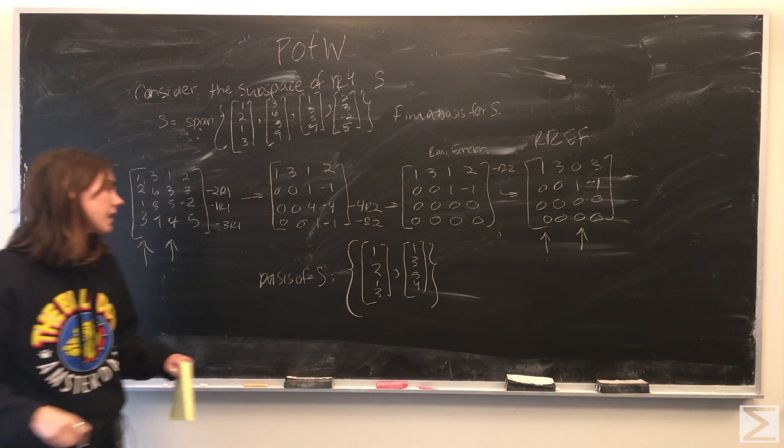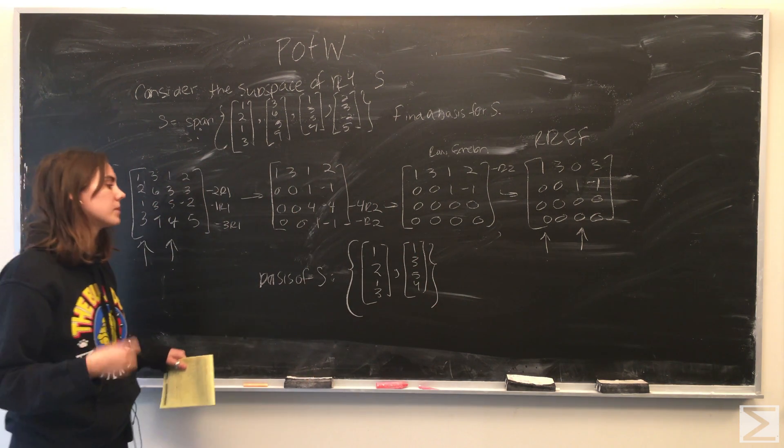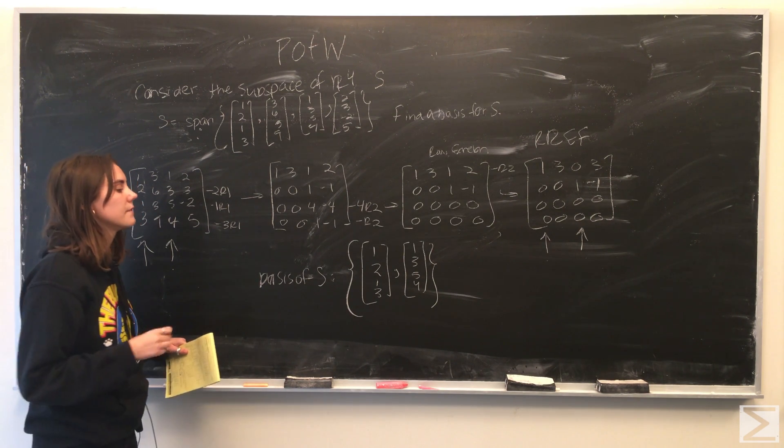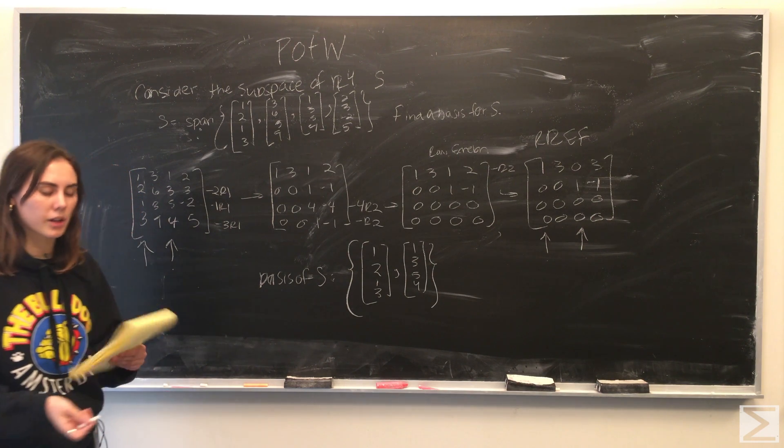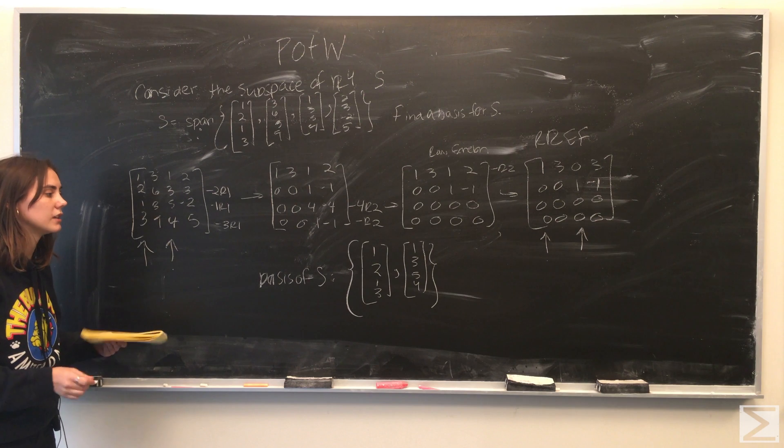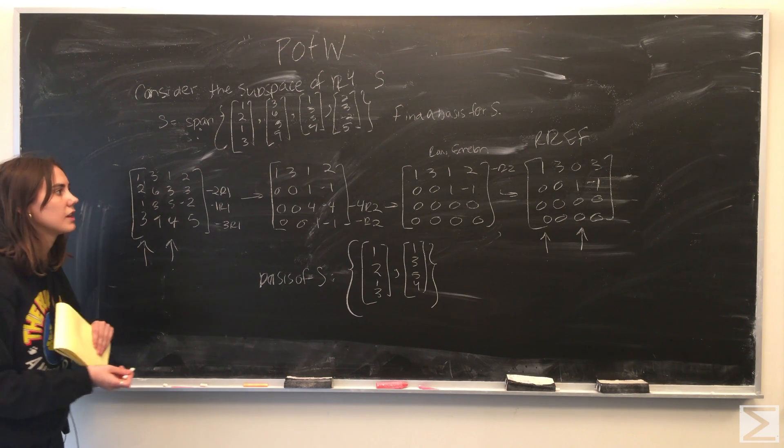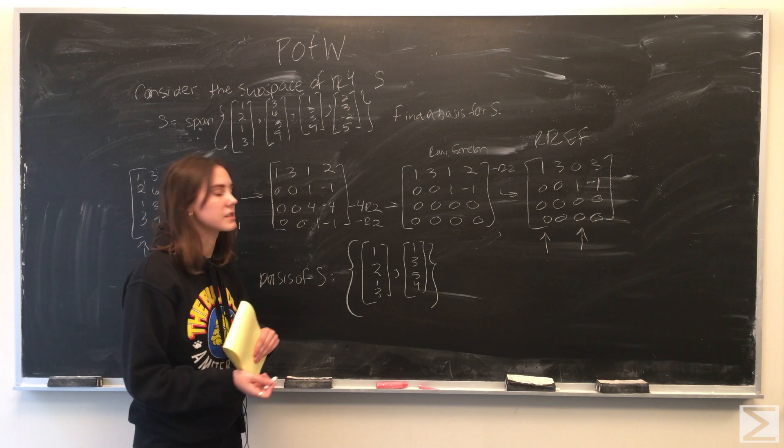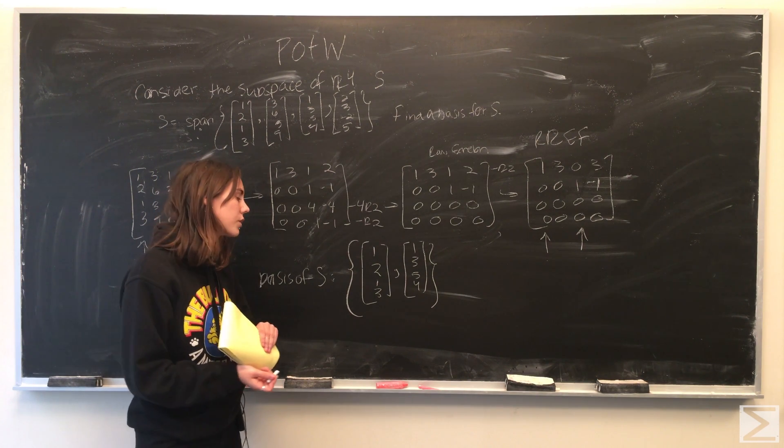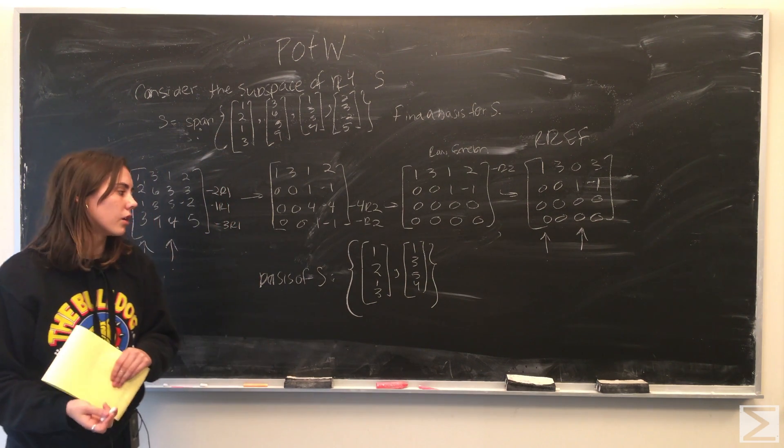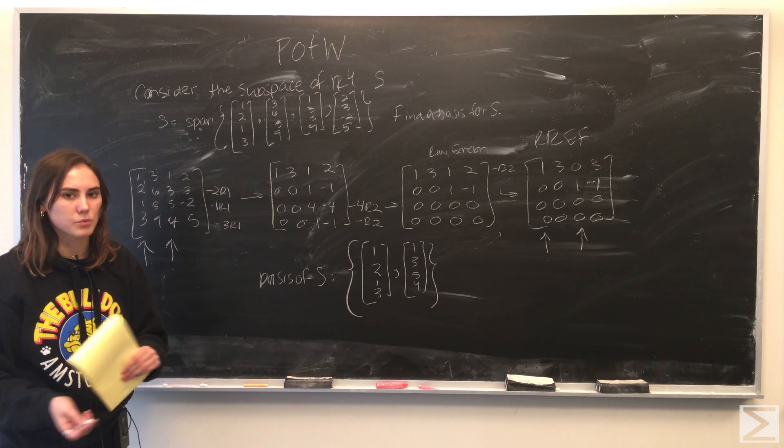So what we can say is that a basis of the subspace S is the vectors [1,2,1,3] and the vector [1,3,5,4]. And what we're going to want to notice is that this basis is not unique. Any two vectors within the subspace S that are linearly independent would form a basis of that subspace. So really any multiple of one of these vectors would form a basis as well.